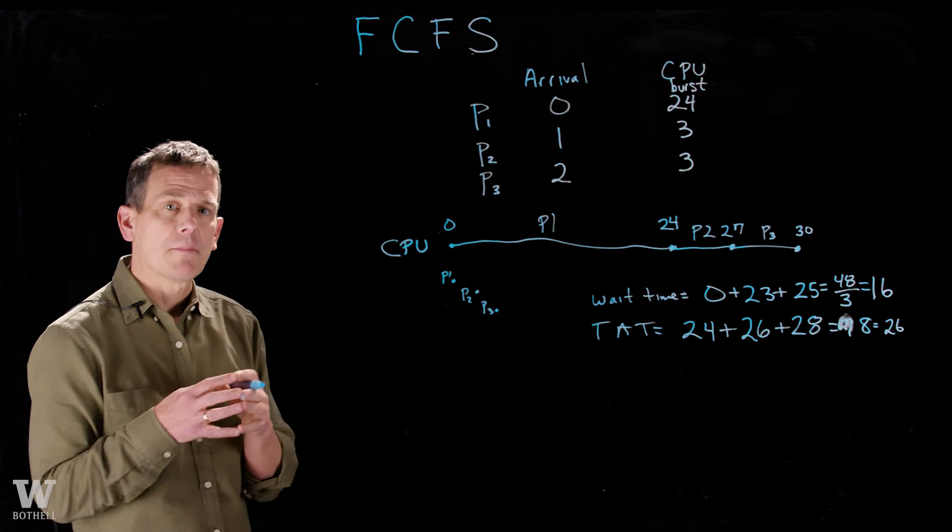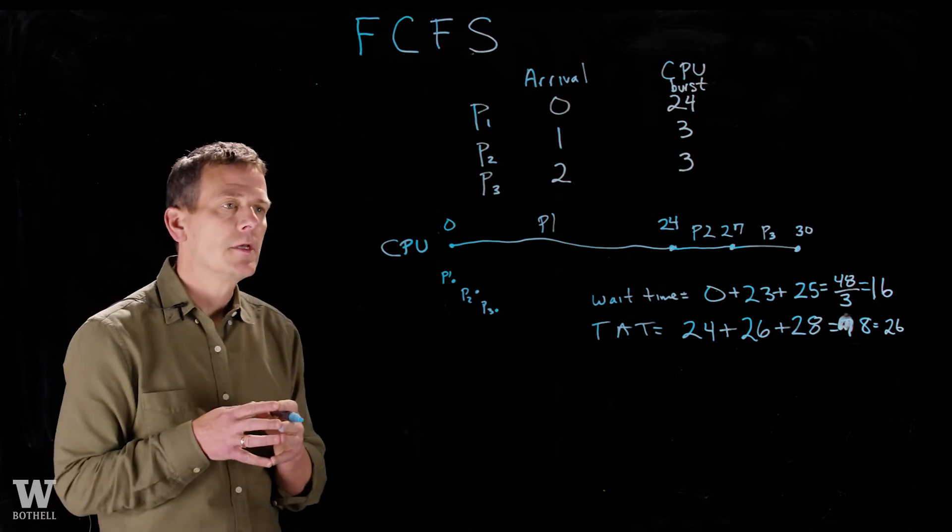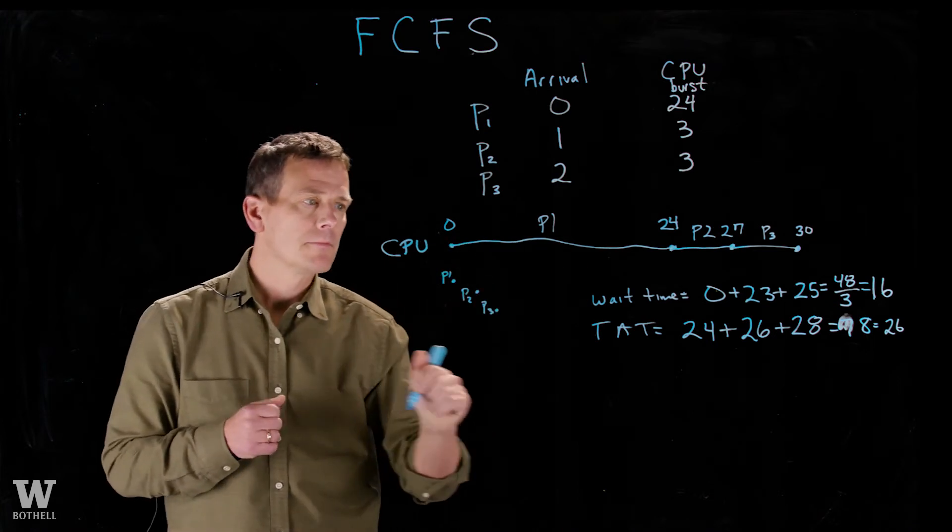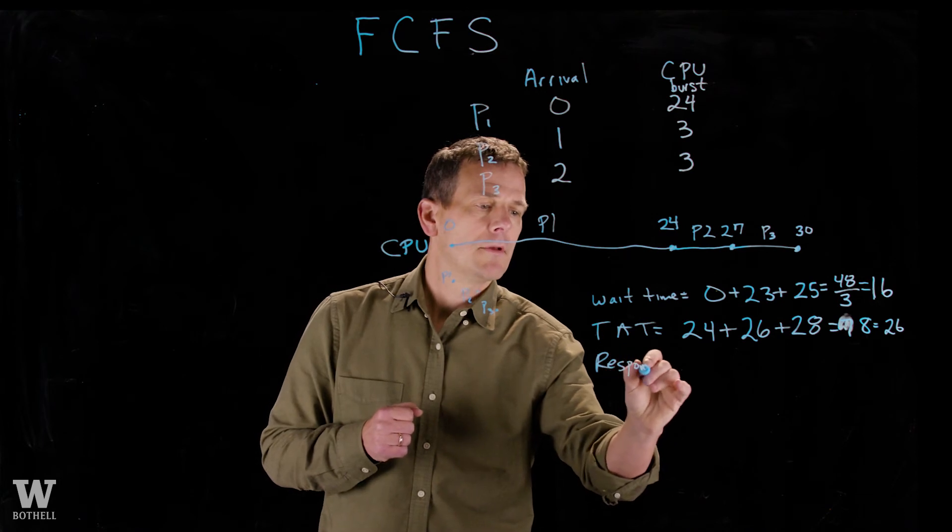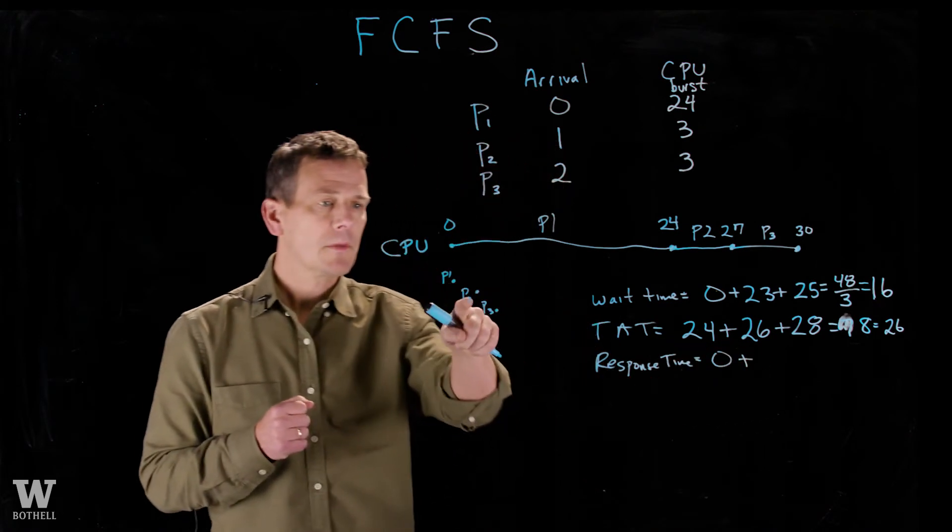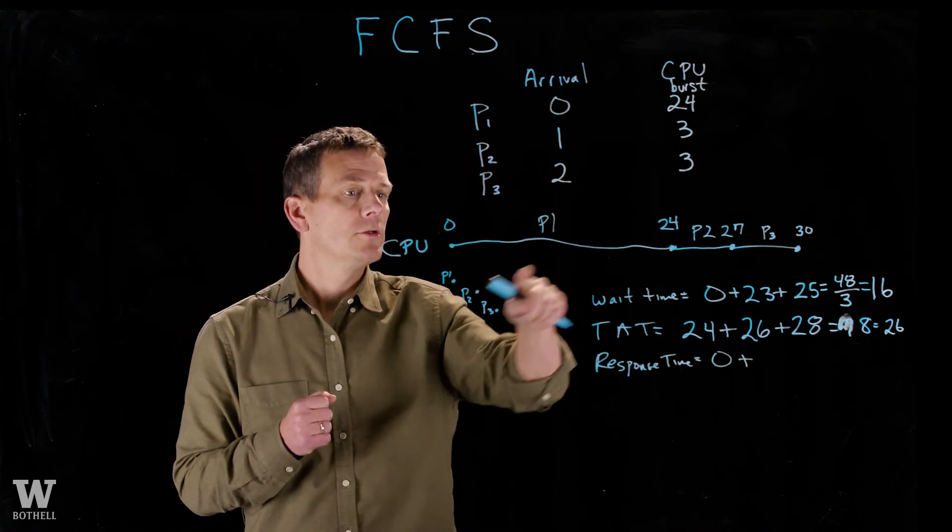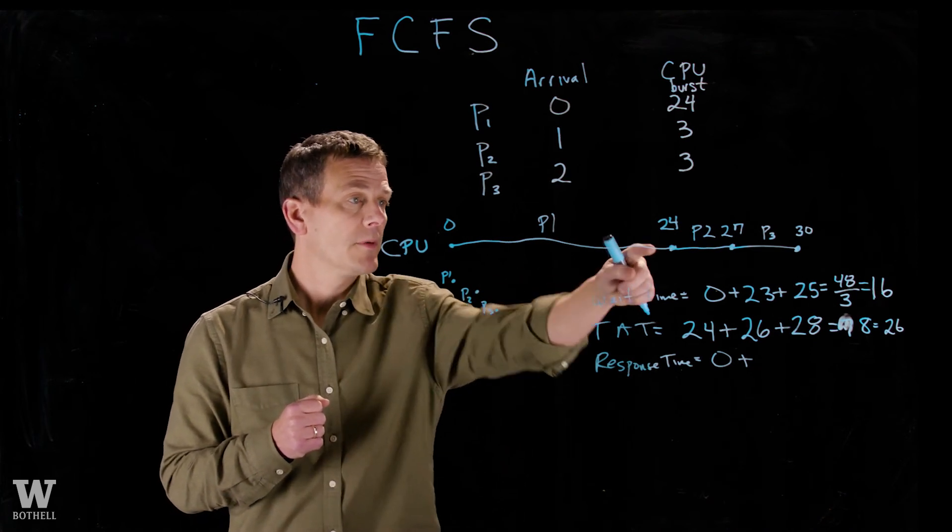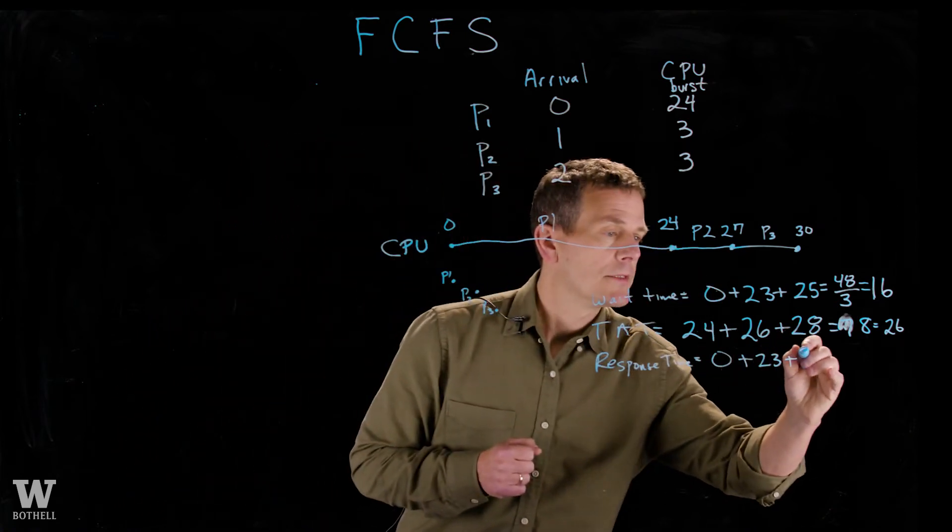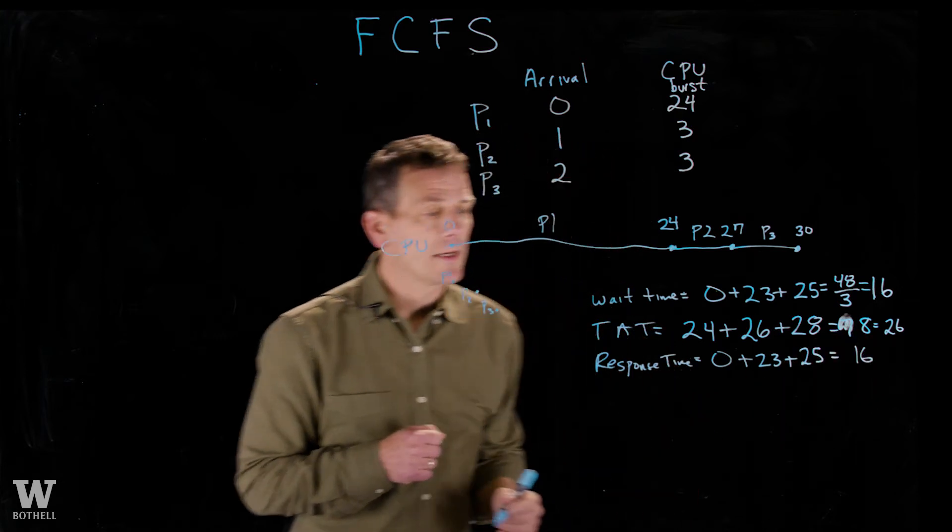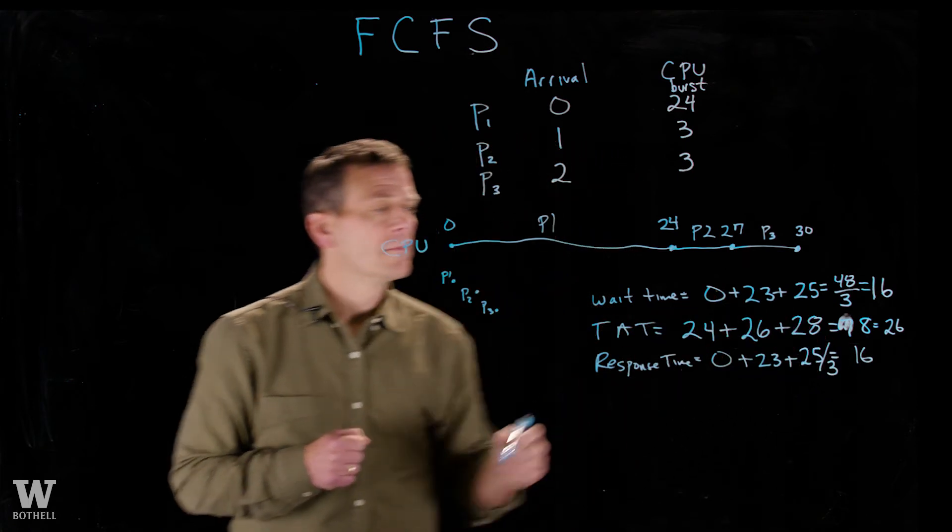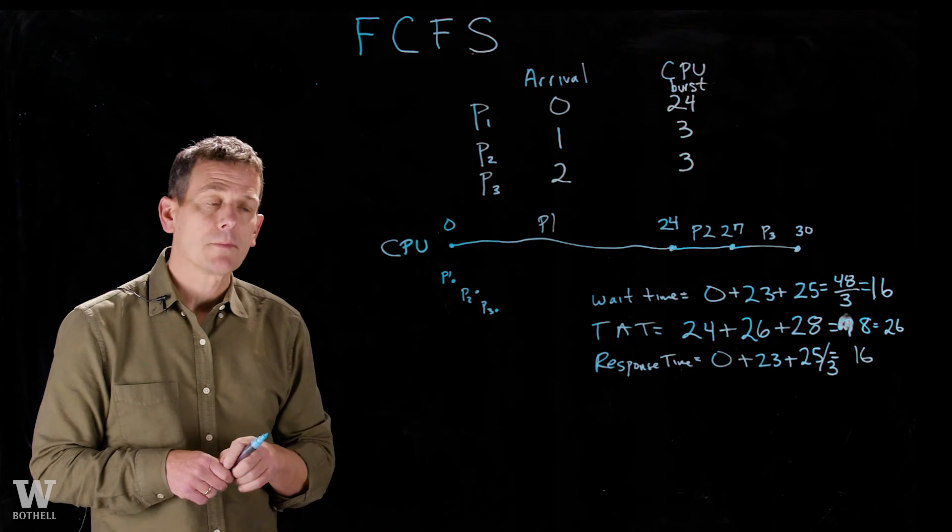One more metric is called response time, how quickly the system responds to the process. This is measured by the time a process enters until it first gets to the CPU. And so response time for this scenario is 0 for P1. For P2, it's 23, because we start at 1 and we get response at 24. And P3 starts at 2 and gets response at 27, so that's 25. Notice the response time and the wait time are the same. In a non-preemptive system, it's often the case that the response time and wait time are the same.